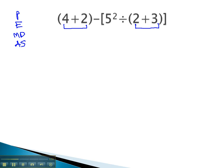So we can do those first, because they're on the inside parentheses. Four plus two is six, minus square parentheses, five squared, divided by two plus three, that's five. Again notice the only thing I'm changing is that one step.